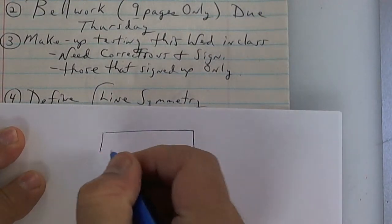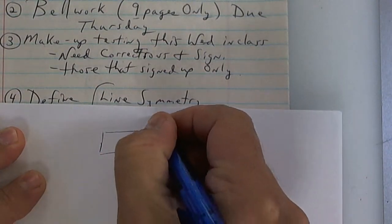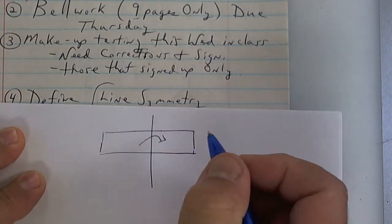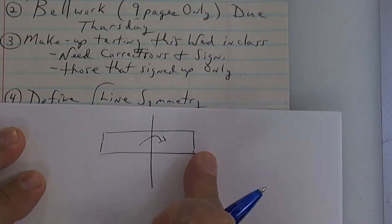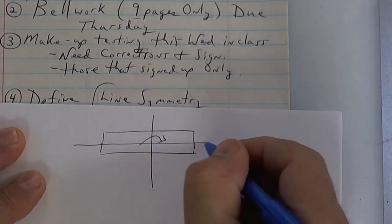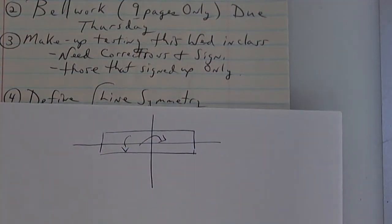Line symmetry: if you take a rectangle, a long skinny rectangle, you have one line of symmetry here where this side folds on that side, and you have another line of symmetry here where this side folds on that one. So I would say two lines of symmetry.